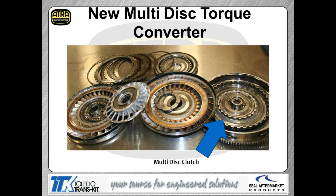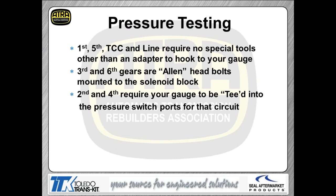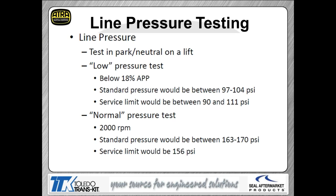Inside the converter there's a multiple-disc clutch — the top picture shows it apart and the bottom-right shows it assembled inside the converter. All those clutch pieces are serviceable and converter companies can buy them. There are pressure taps for every gear — typically applied pressure taps — meaning you can measure pressure going directly to the clutch after the orifice to diagnose pressure issues right at the clutch pack. There's also a line pressure tap and a TCC tap.